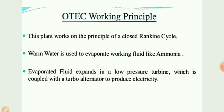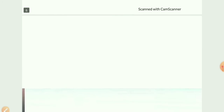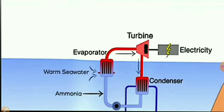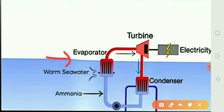This is the principle of ocean thermal energy conversion. Looking at the diagram: we have surface water at 21 to 29 degrees centigrade and deeper water at 5 degrees centigrade. There is an evaporator connected to the warm surface water, and a turbine connected to a generator.